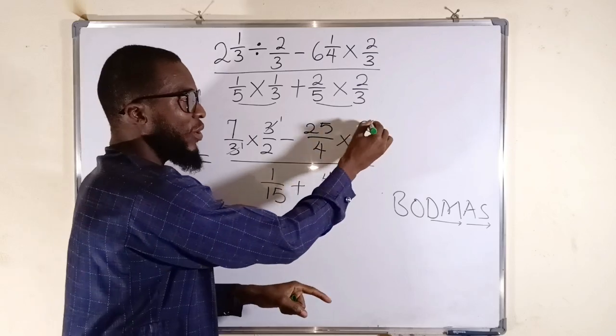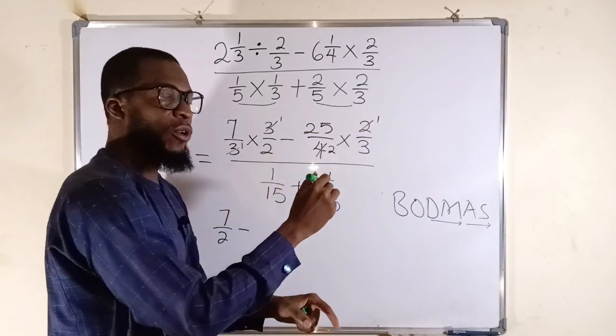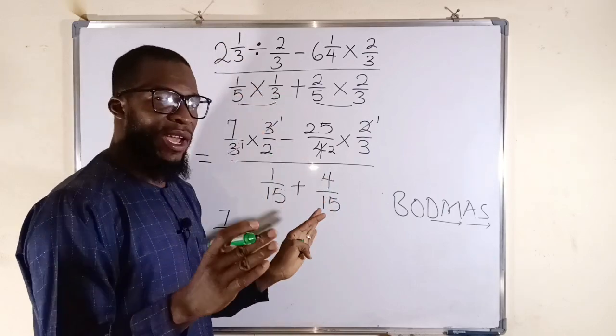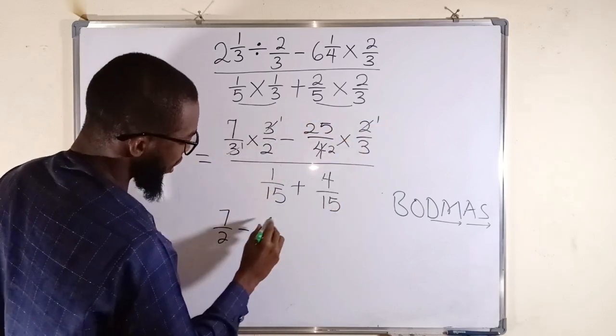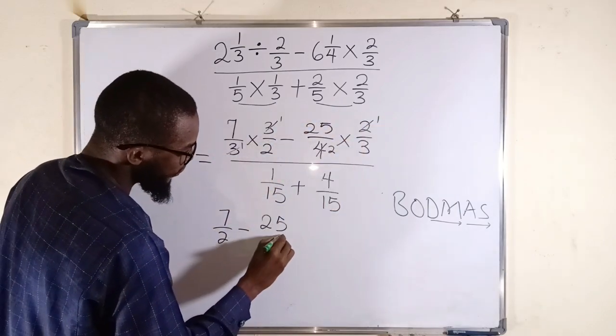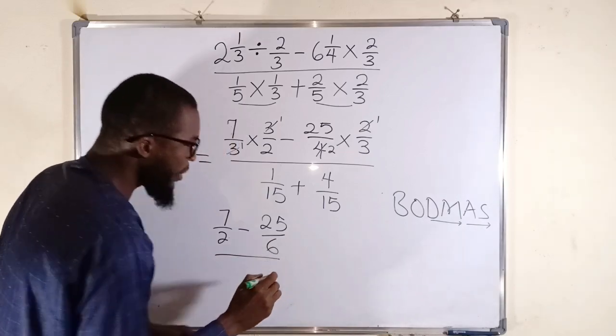Also here, 2 can go into 2 one time. It can go into 4 two times. Always observe the numerator and denominator if there is any common factor. So to the top, we have 25 times 1, which is 25. To the bottom, we have 2 times 3, which is equal to 6. Divide by.